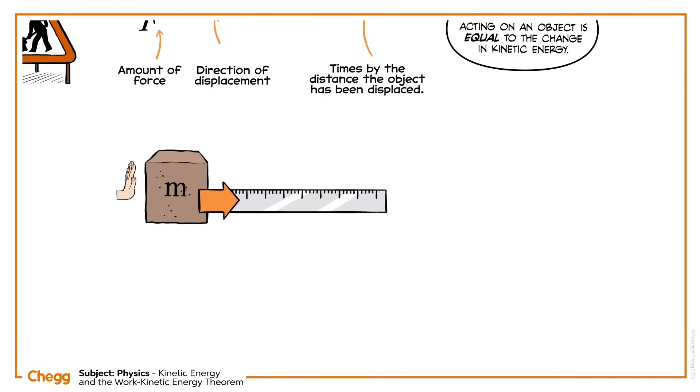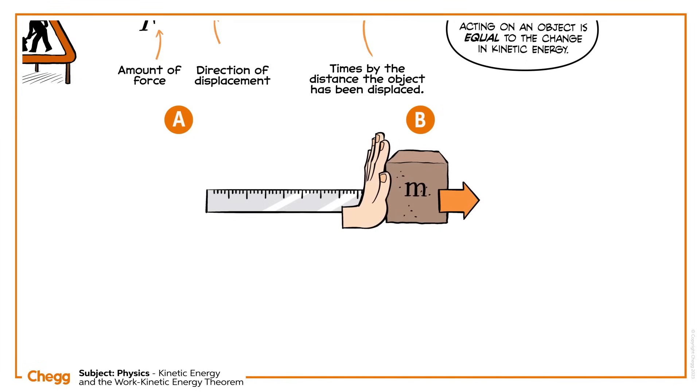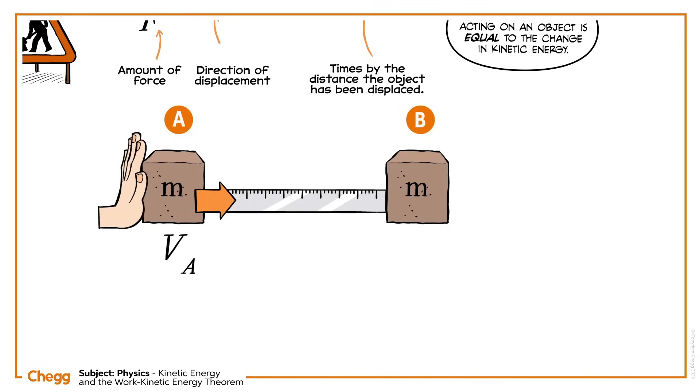Revisiting that box you pushed, say you moved it from point A to point B. At point A, it had a velocity VA. When you applied the force of magnitude F, you changed its velocity, so that when it reaches point B, it has velocity VB. During this period, you displaced it by distance D.